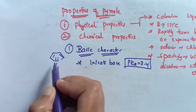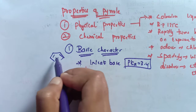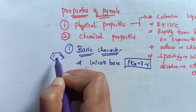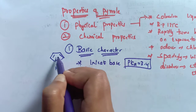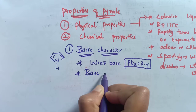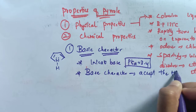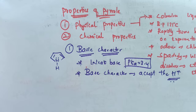The lone pair of electrons on nitrogen undergoes delocalization for the formation of delocalized pi molecular orbitals, and these electrons are not available for the formation of a new bond with a proton. A very important characteristic of a base is that it should accept a proton (H+), but if we add an acid to pyrrole, it will not accept the proton.